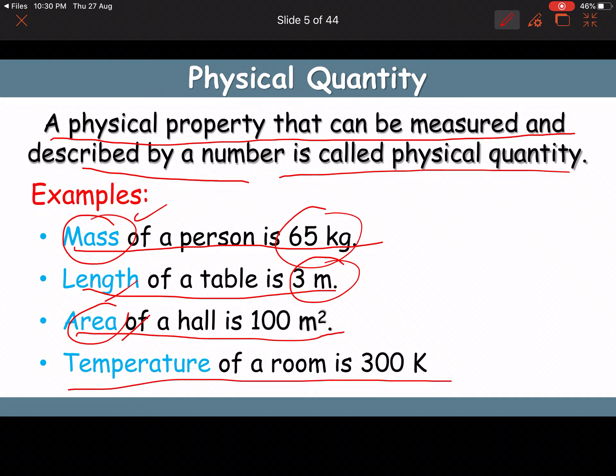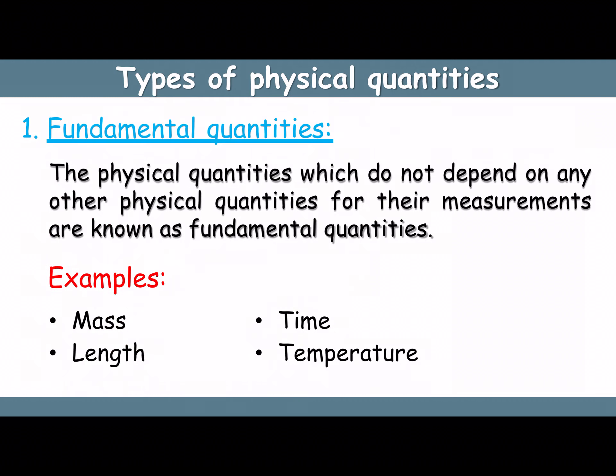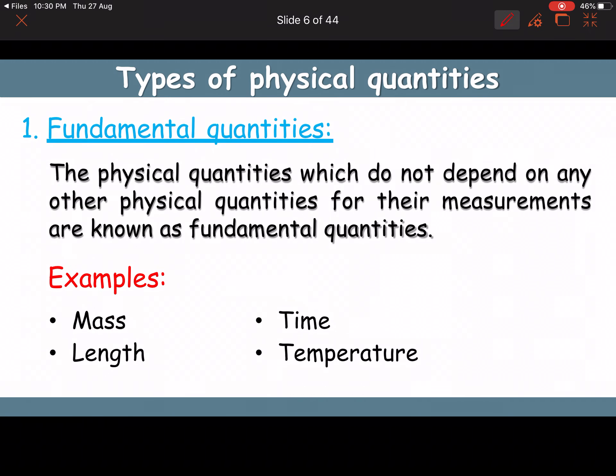Temperature of a room is 300 Kelvin — temperature is a physical quantity. Next we will read about the types of physical quantity.